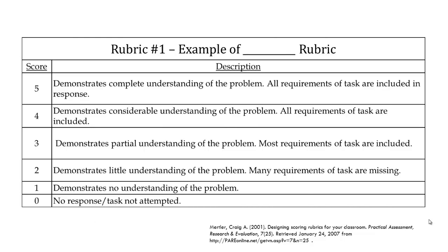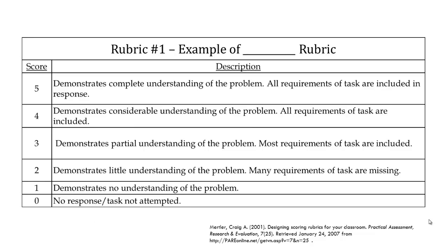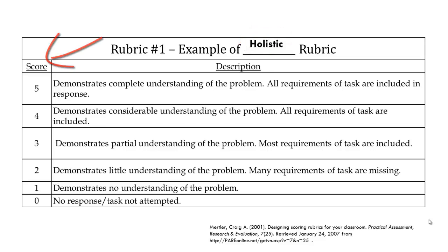Take a look at this rubric example. It has one score for each description and does not look at individual components of what seems to be a problem-solving task. So what type of rubric is this — analytic or holistic? Hopefully you identified this example as a holistic rubric, because it provides one global score or rating of a process or product related to some type of problem-solving task, rather than the individual components.